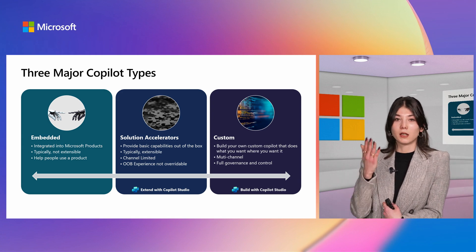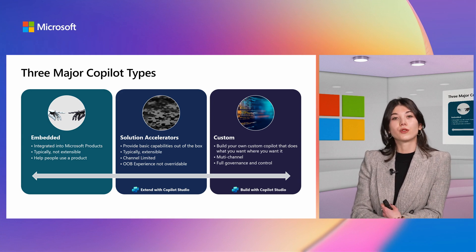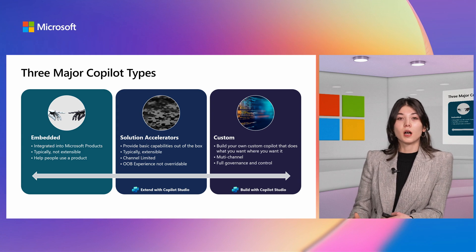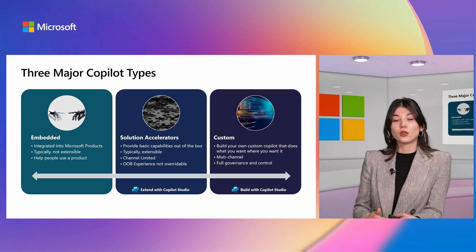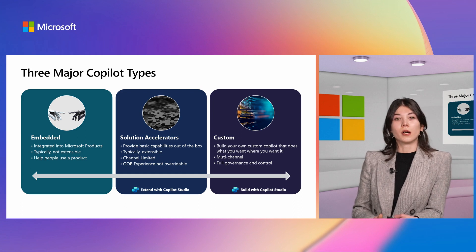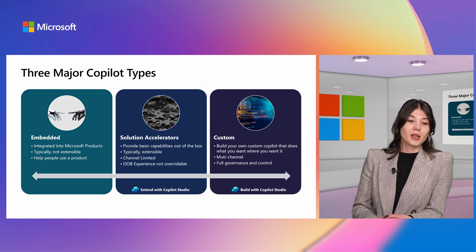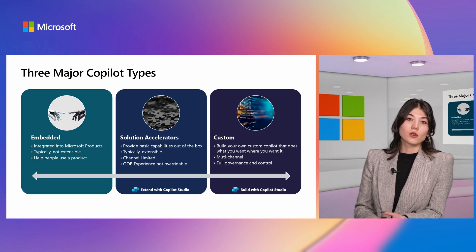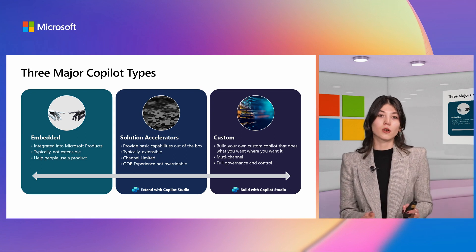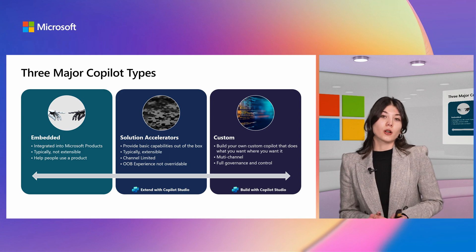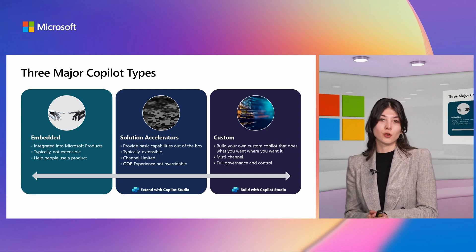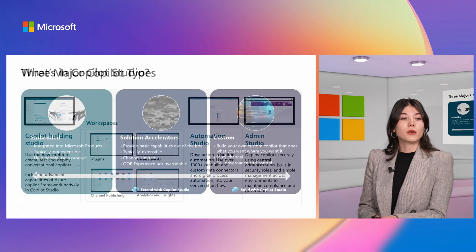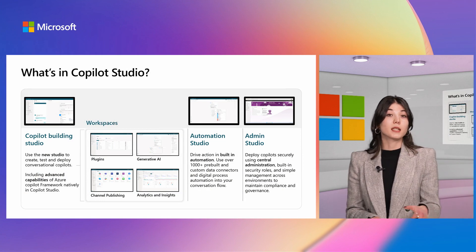Second, solution accelerators — these are built-in solutions like Microsoft 365 Copilot, Copilot for Sales, and Copilot for Service. They come out of the box but can be extended using Copilot Studio, for example by connecting to line-of-business applications or third-party tools. However, these are channel-limited. Third, custom copilots — all copilots you build using Copilot Studio — are custom-made to your needs, can be extended as much as you want, and can be published to multiple internal and external channels.